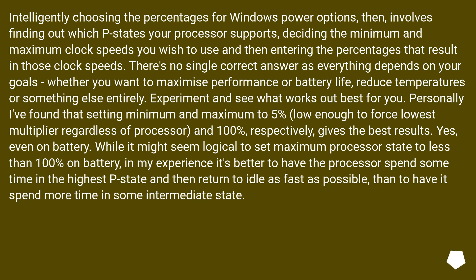Personally, I found that setting minimum to 5% — low enough to force the lowest multiplier regardless of processor — and maximum to 100% gives the best results, even on battery. While it might seem logical to set maximum processor state to less than 100% on battery, in my experience it's better to have the processor spend some time in the highest P state and then return to idle as fast as possible, rather than spending more time in some intermediate state.